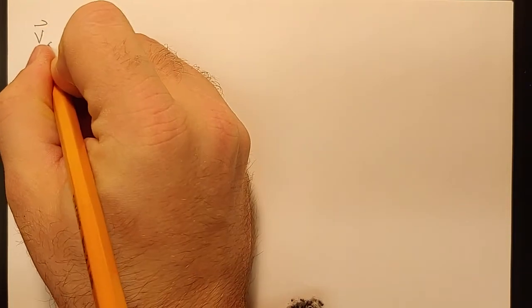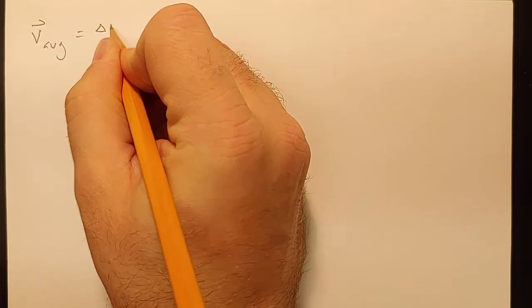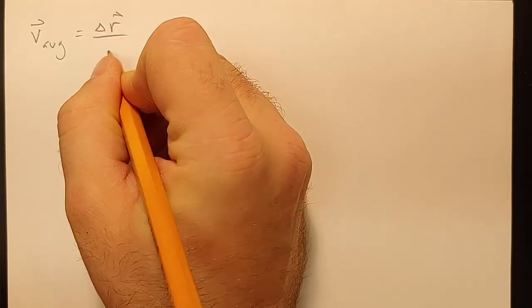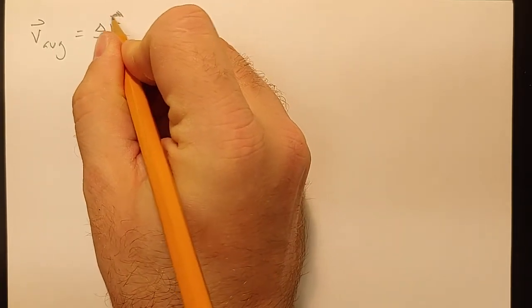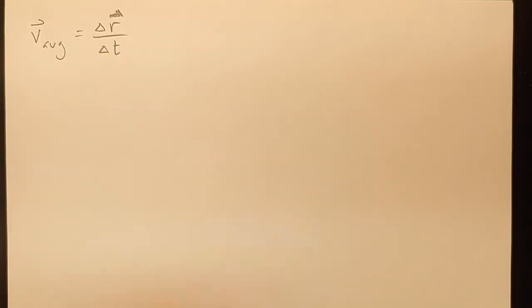So velocity, same thing. Average velocity is still just the change in position over the change in time, and so a change in your position vector, accounting for x, y, and the z, over the change in time.